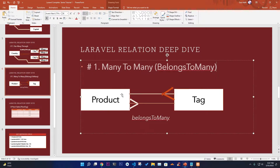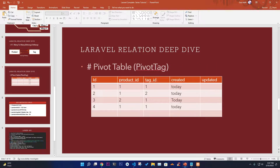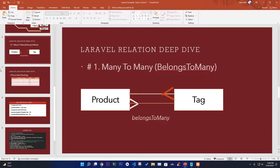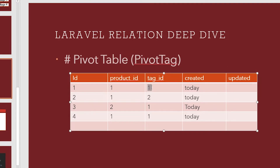We need to create two models: Product and Tag. For that we also need the concept of a pivot table — to keep track of things, we create a table with two foreign keys: product_id and tag_id. For example, product id 1 with tag id 1 means that product belongs to that tag. Jeans can belong to both male and female tags.